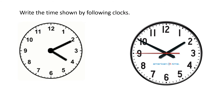Write the time shown by the following clocks. In the first picture, the hour hand is at 4 — that shows 4 hours. The minute hand is at 2, which means 10 minutes — you multiply 2 by 5, and 2 fives are 10. So the time is 4:10, or 10 minutes past 4.